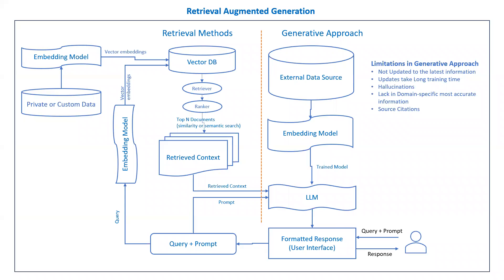Hello everyone. Today we are going to discuss Retrieval Augmented Generation, famously known as RAG architecture. This is a very famous topic in the generative AI world. In this video, I'll be talking about each individual component of the whole architecture shown on your screen and explaining the role of every component.